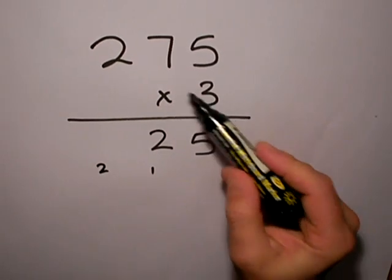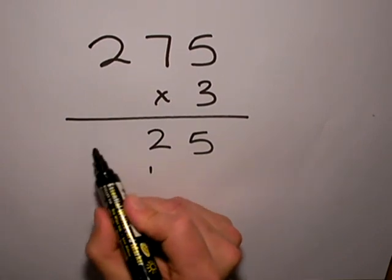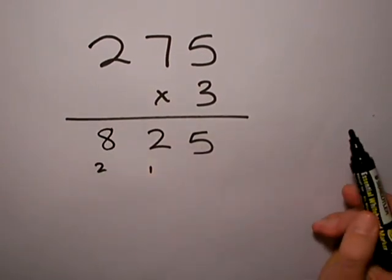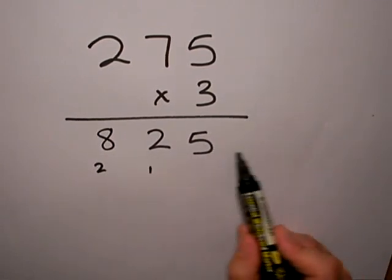And then 3 multiplied by the 2, which is 6. Don't forget the 2 to carry, so 6 plus 2 is 8. So, 275 multiplied by 3 is 825.